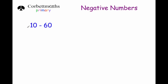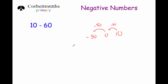Our next question is to work out ten subtract sixty. So first of all, let's start off with ten, and we're going to take away ten — ten take away ten is zero. But altogether we need to subtract sixty, so if we've taken away ten, we've still got another fifty to subtract. Zero take away fifty is going to equal minus fifty. So our answer would be minus fifty.